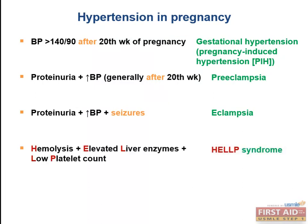HELLP syndrome is the combination of hemolysis plus elevated liver enzymes plus low platelet count. This tends to be one of the severe manifestations of preeclampsia, where the low platelet count plus hemolysis points towards a microangiopathic hemolytic anemia, or schistocytosis. If they mention decreased red blood cells, thrombocytopenia, and increased liver enzymes, this is characteristic of preeclampsia. If they ask what you would see on a blood smear, the answer is schistocytes — fragmented red blood cells.